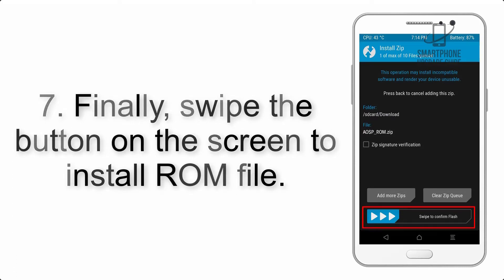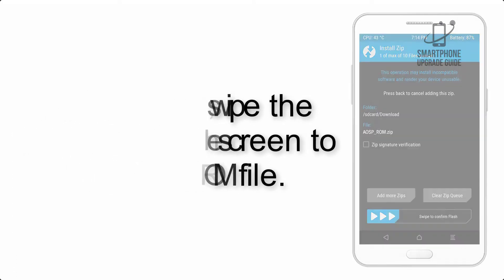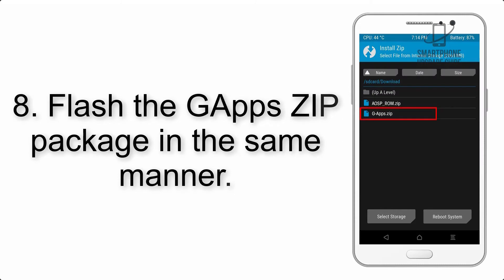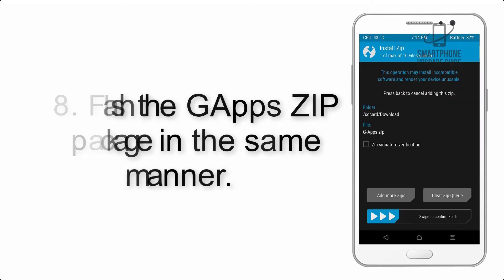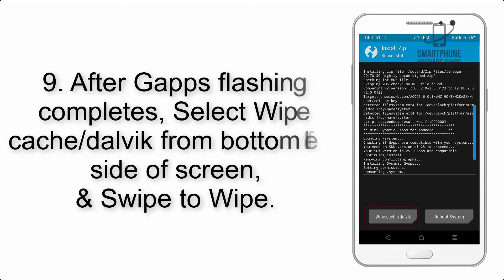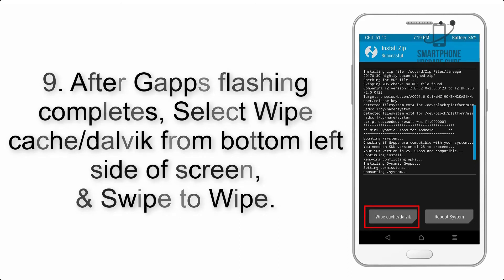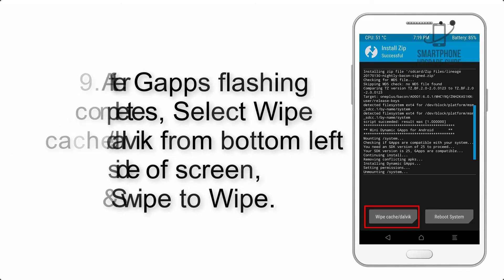Step 7: Swipe the button on the screen to install the ROM file. Step 8: Flash the G apps zip package in the same manner. Step 9: After G apps flashing completes, select Wipe Cache and Dalvik from the bottom left side of the screen and swipe to wipe.